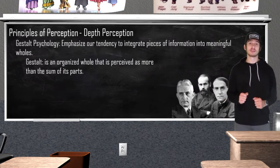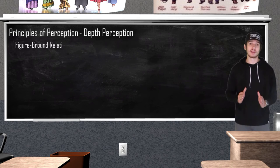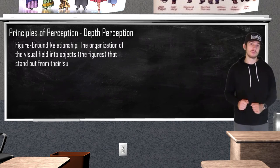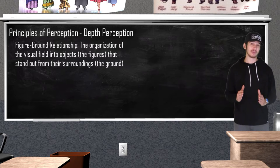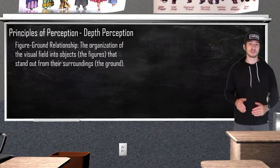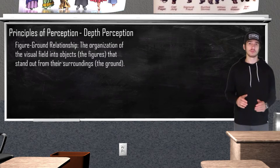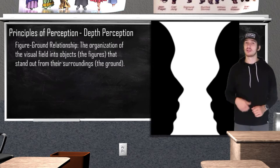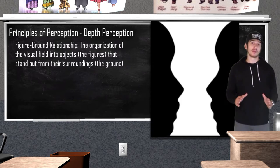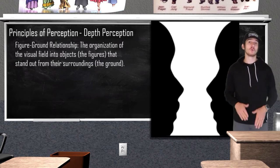In form perception, the main idea is the figure-ground relationship. This basically states that what we are currently looking at, we perceive as a visual figure, and it stands out from all other objects, which would be considered the ground. This figure-ground relationship continuously reverses as you change your focus. This can be seen in illusions such as the chalice picture — is this a cup or two people staring each other down? It all depends on what you perceive as the foreground versus the background.